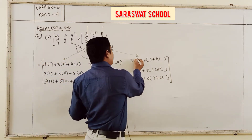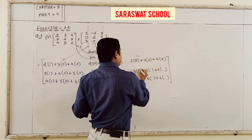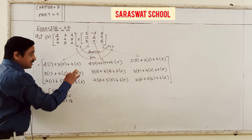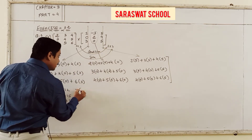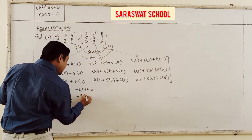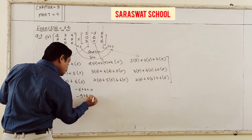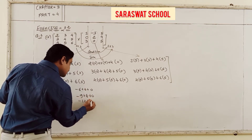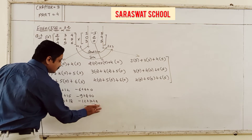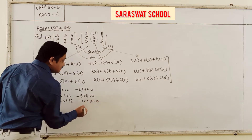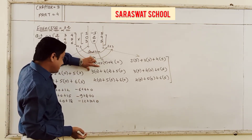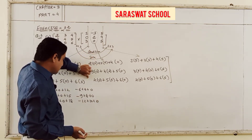Secondly: minus 3, 2, 0. Minus 3, 2, 0. Similarly, minus 3, 2, 0 and minus 3, 2, 0. And last: 5, 4, 5; 5, 4, 5; and 5, 4, 5. Now calculate the final answer.